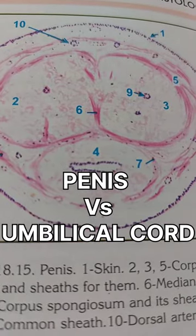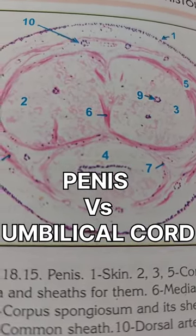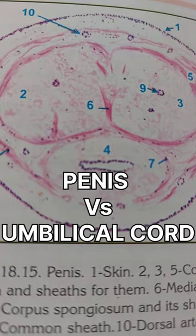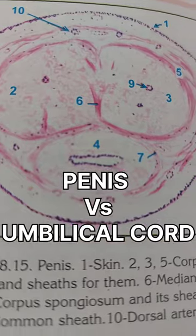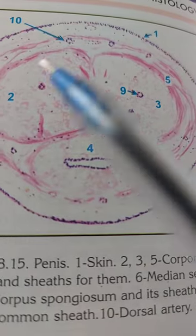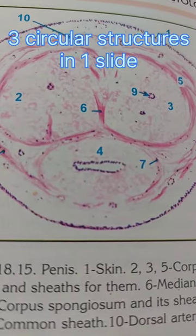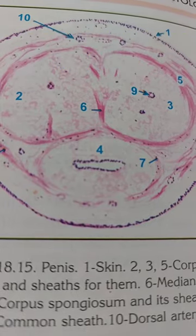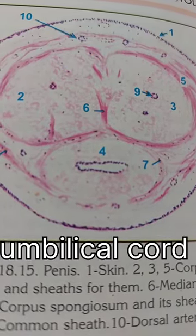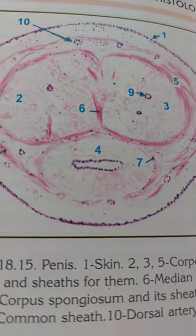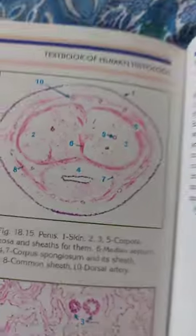Welcome back to my channel. This is a quick video on two things — we have two slides, which has three circular structures. If you have one slide with three circular structures, it can be two things: one, either your umbilical cord, or two, a penis. This is a penis section where you can see one, two, and three structures.